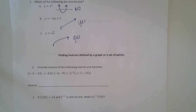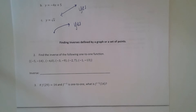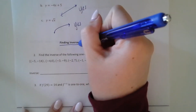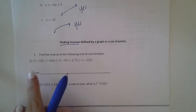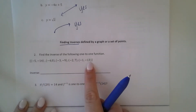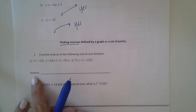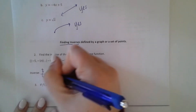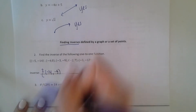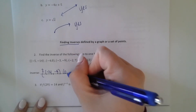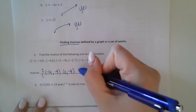The reason why we're talking about one-to-one functions is because you need a function to be one-to-one in order to find the inverse. If it's not one-to-one, then you can't find the inverse. Inverse functions is when we're switching our x's and our y's. So for example, if these are my function — just these ordered pairs — then the inverse function is when we switch them. So instead of negative 5, negative 14, it's negative 14, negative 5. Instead of negative 4, 0, it's 0, negative 4, and so on.